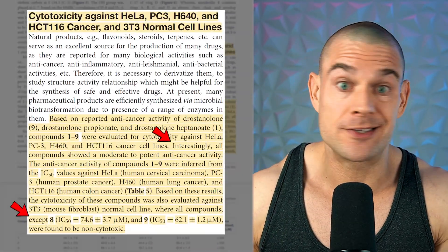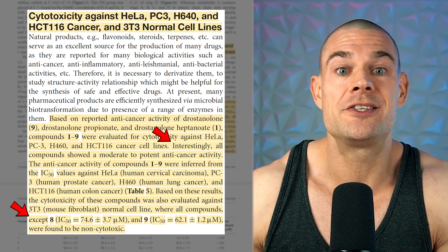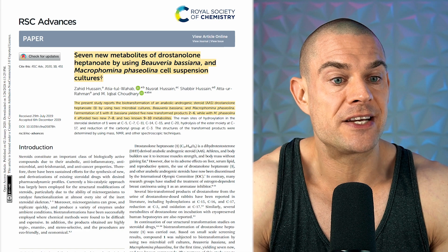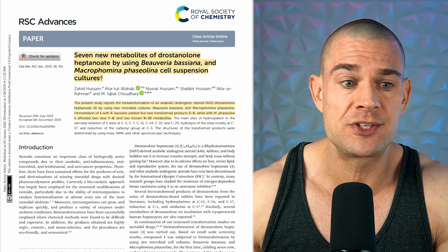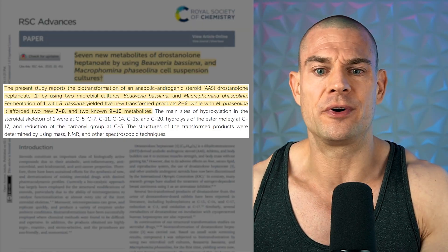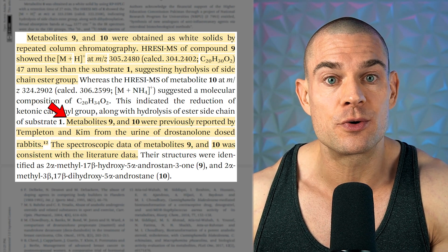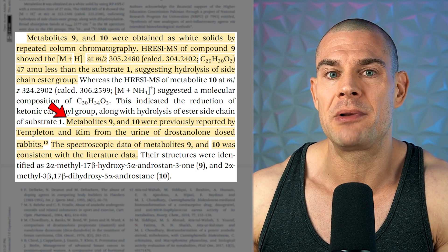Just keep in mind that cytotoxicity doesn't automatically mean that a compound is carcinogenic, but all carcinogenic compounds are considered to be cytotoxic. There's another study documenting metabolites produced through biotransformation of drostanolone heptanoate using two other kinds of fungi, though the researchers didn't look into anti-cancer effects. Two of these metabolites were previously detected in the urine of rabbits dosed with drostanolone orally, so there may be some hope that these metabolites can be produced within the human body — but so far the scientific evidence is extremely lacking.